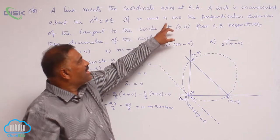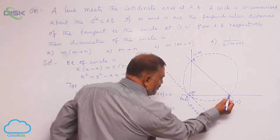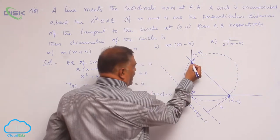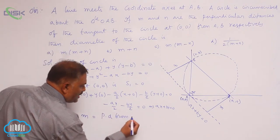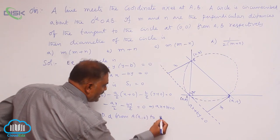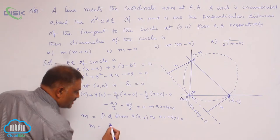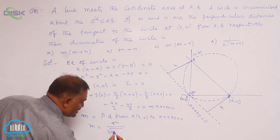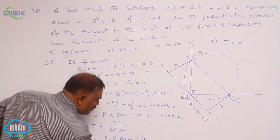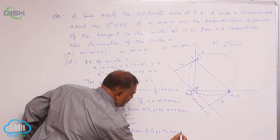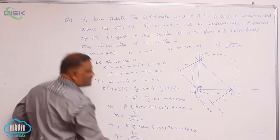M and N are the perpendicular distances of the tangent from A and B respectively. From A you drop a perpendicular distance that is M, and from B it is N. So M equals the perpendicular distance from A(a,0) to Ax plus By equals 0, giving M equals A squared divided by the square root of A squared plus B squared. Similarly, N equals the perpendicular distance from B(0,b) to Ax plus By equals 0, giving N equals B squared divided by the square root of A squared plus B squared.